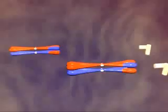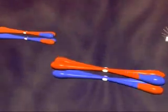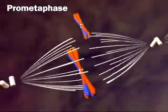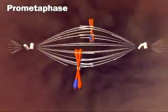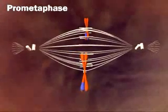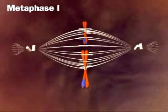Pro-metaphase begins as the nuclear envelope disappears and the spindle invades the nuclear space. Pairs of homologous chromosomes move together to the equatorial plate for metaphase I.